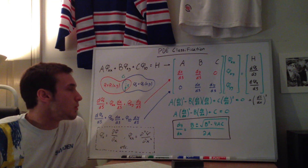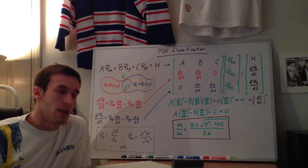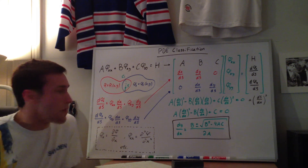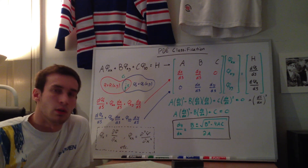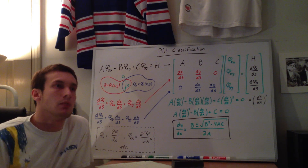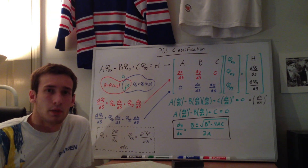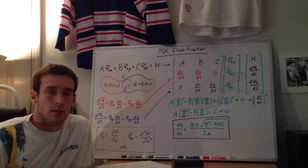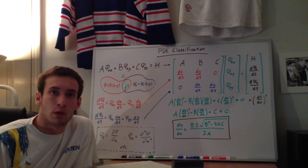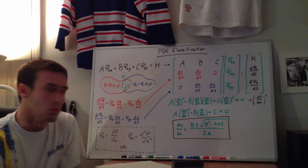So we want to be able to classify what kind of PDE it is. The reason for this is that the mathematical characteristics of how we actually solve a specific type of equation depends on what kind of classification, or what type of PDE it is. The three types of PDEs we'll be looking at are elliptic, parabolic, and hyperbolic, and I'll explain what those mean later and in another video more in depth.